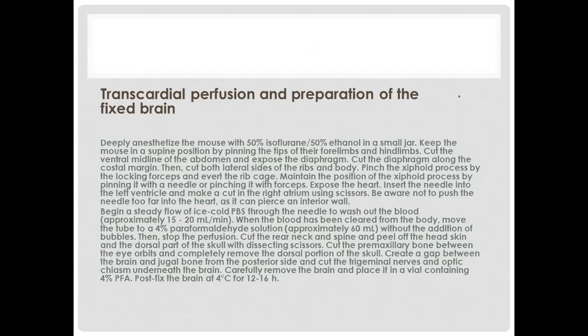The next step is transcardial perfusion and preparation of the fixed brain. Deeply anesthetize the mouse with 50% isoflurane or 50% ethanol in a small jar. Keep the mouse in a supine position by pinning the tips of their forelimbs and hindlimbs. Cut the ventral midline of the abdomen and expose the diaphragm. Cut the diaphragm along the costal margin, then cut both lateral sides of the ribs and body. Pinch the xiphoid process with locking forceps and invert the rib cage. Maintain the position of the xiphoid process by pinning it with a needle or pinching it with forceps. Expose the heart, insert the needle into the left ventricle and make a cut in the right atrium using scissors. Be aware not to push the needle too far into the heart as it can pierce an interior wall; the following process is shown on screen.